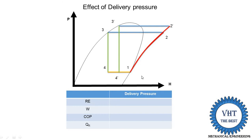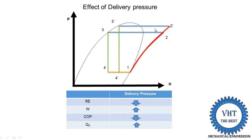For delivery pressure: refrigerating effect is reduced because H1 minus H4-dash is a smaller line than H1 minus H4. Work done is increased because H2-dash is greater than H2, so H2-dash minus H1 is larger. COP equals refrigerating effect divided by work done — refrigerating effect is reduced and work done is increased, so COP is reduced. Heat rejection is also increased because at the higher pressure region a higher mass flow rate is required, demanding more air or water for cooling. So increasing delivery pressure reduces system performance.